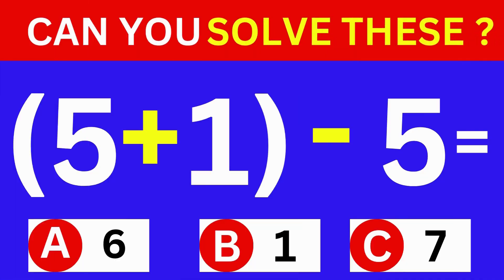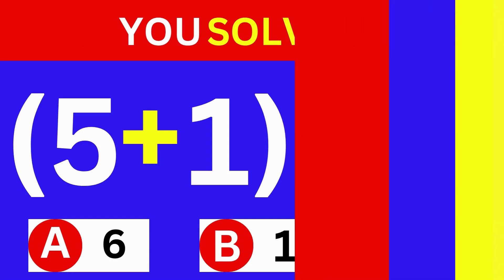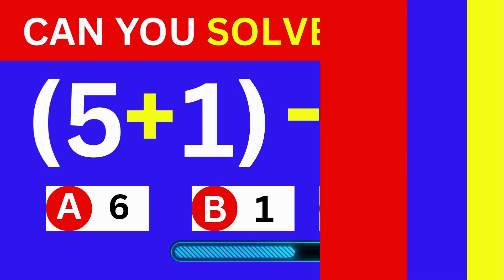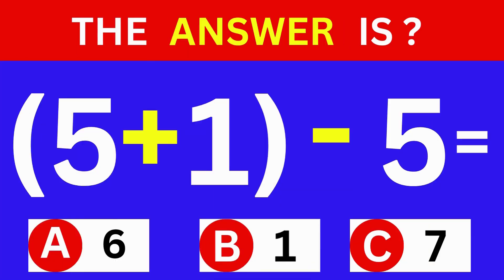5 plus 1 minus 5 equals? A: 6. B: 1. C: 7. The answer is option B: 1.